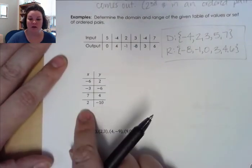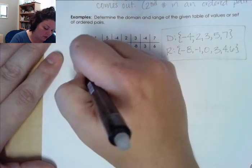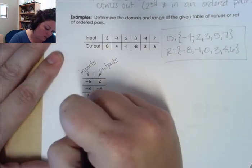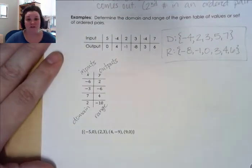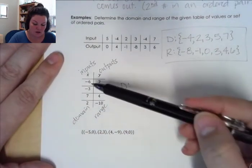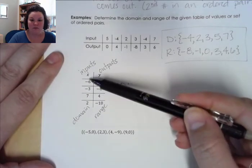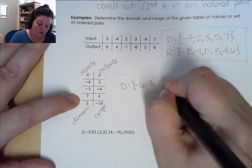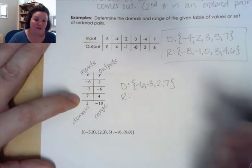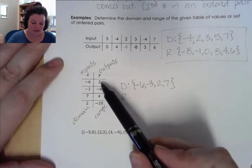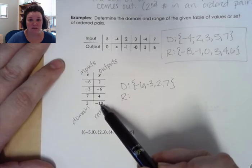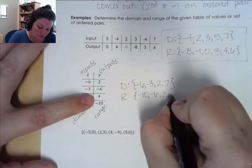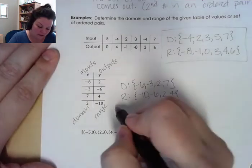The same thing is true when we have a table of values. Our x's are inputs and our y's are outputs — this is our domain and range. My domain values are negative 6, negative 3, 7, and 2. Listing from smallest to largest: negative 6, negative 3, 2, then 7. My range values are 2, negative 6, 4, and negative 10. From smallest to largest: negative 10, negative 6, 2, then 4.